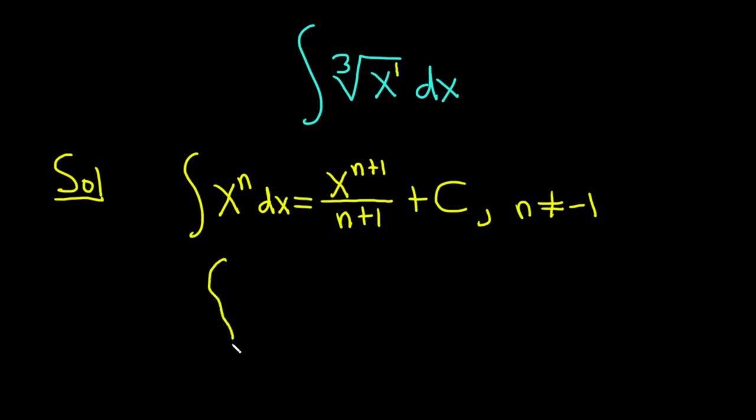So what you can do, you can write it as x, and it's always this number over this number. Always. Okay, so 1 over 3. That's the trick. dx.